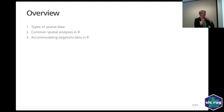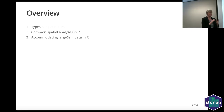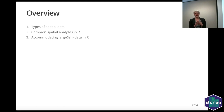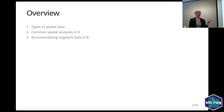You guys know more about R than I do, but I know a little bit about spatial statistics. I'm going to first talk about three types of spatial data, then do some common spatial analyses in R — specifically prediction and kriging — and then touch on accommodating large data. I have a feeling many of you deal with a lot of data, so I've touched on a couple of packages that accommodate big data — hundreds of thousands of data points, maybe not millions.